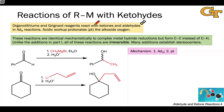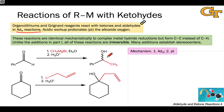Organolithiums and Grignard reagents are great nucleophiles at carbon, and when we combine them with aldehydes or ketones, it's perhaps not that surprising that they engage in nucleophilic addition to the polarized C-O pi bond, or ADN reactions. This generates an alkoxide anion, which upon acidic workup gives an alcohol.